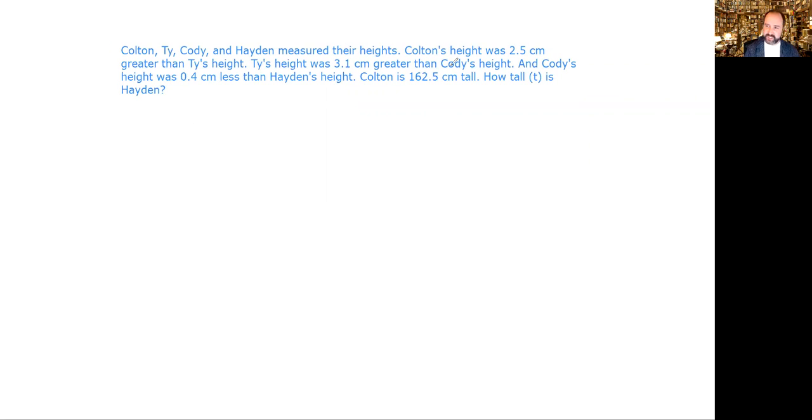We have a bunch of relationships. Colton's height is 2.5 more than Ty's. Ty's is 3.1 more than Cody's. Cody's is 0.4 less than Hayden's. We know Colton is 162.5. The question is, how tall is Hayden? So the way you do this is you say Hayden is t.